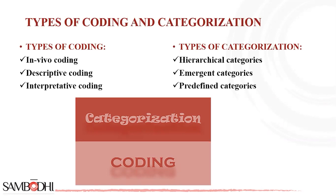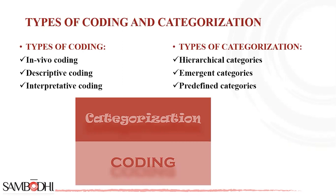The second type of categorization is emergent categories, which allow categories to emerge naturally from the data without a predetermined structure. Emergent categories arise directly from the data during the analysis process. Unlike predefined or predetermined categories, emergent categories are not established before data collection — instead, they emerge organically from the data itself. Researchers allow themes or categories to emerge naturally as they engage with the data in an inductive manner, remaining open-minded and flexible during the analysis.